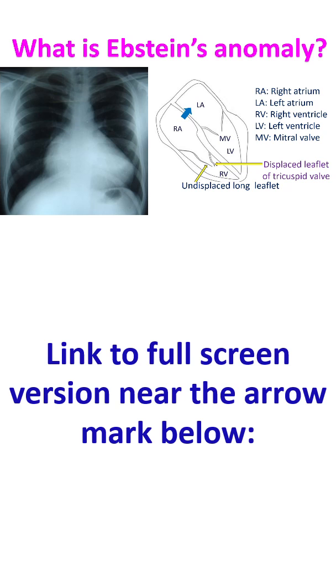Ebstein's anomaly is a congenital anomaly of the tricuspid valve which may manifest soon after birth or more commonly later in life.